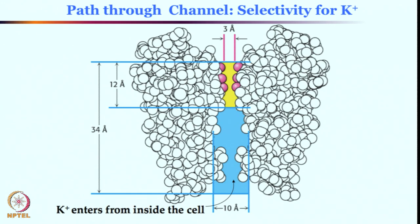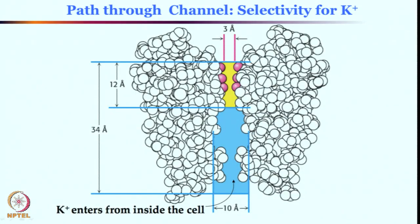The question is how selectivity is obtained. Bigger ions will get stuck at the narrow passage and will not be able to pass through. Smaller ions should pass through all of it. For example, lithium and sodium are smaller than potassium — but why are lithium and sodium not passing all the way from inside to outside the cell through this potassium channel? Why is it so specific for potassium, while sodium and lithium cannot pass through this channel?